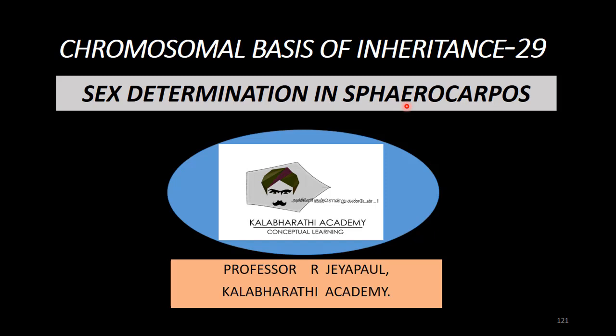Sphaerocarpus is a bryophyte. Bryophyte is a non-vascular plant — xylem and phloem structures are absent in it. It has got a thalloid body, that is leaf-like and root-like structures will be there, but it is not definite leaves, only roots or stems. This is called Sphaerocarpus.